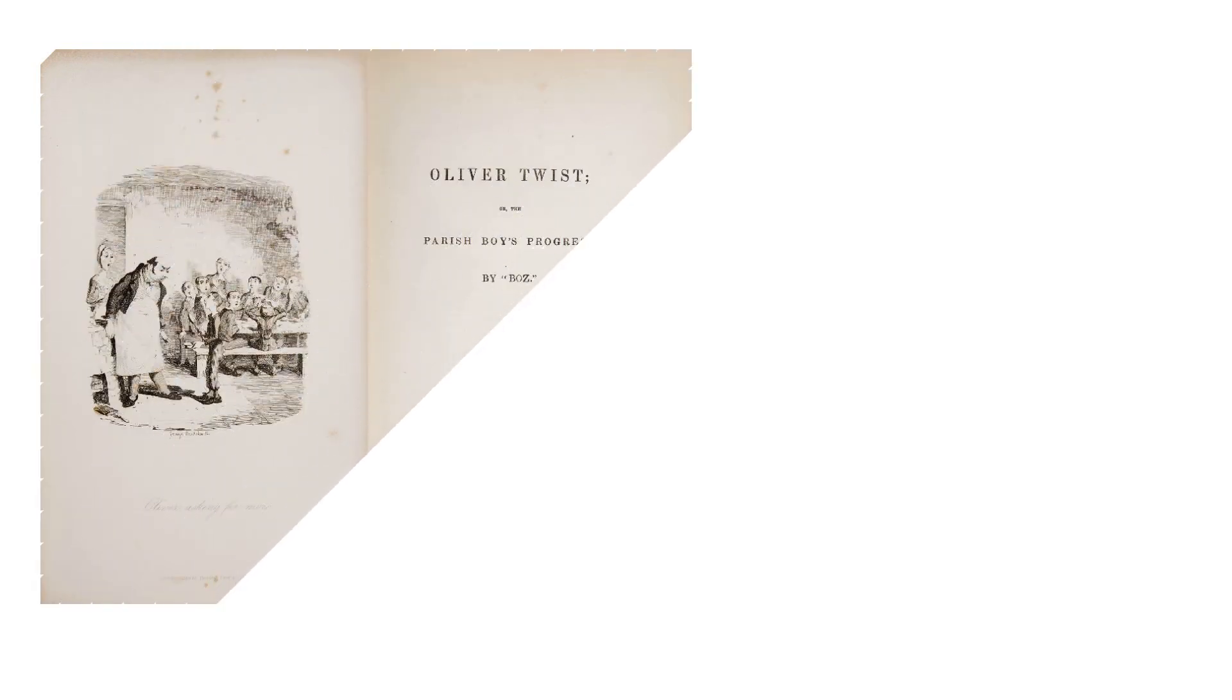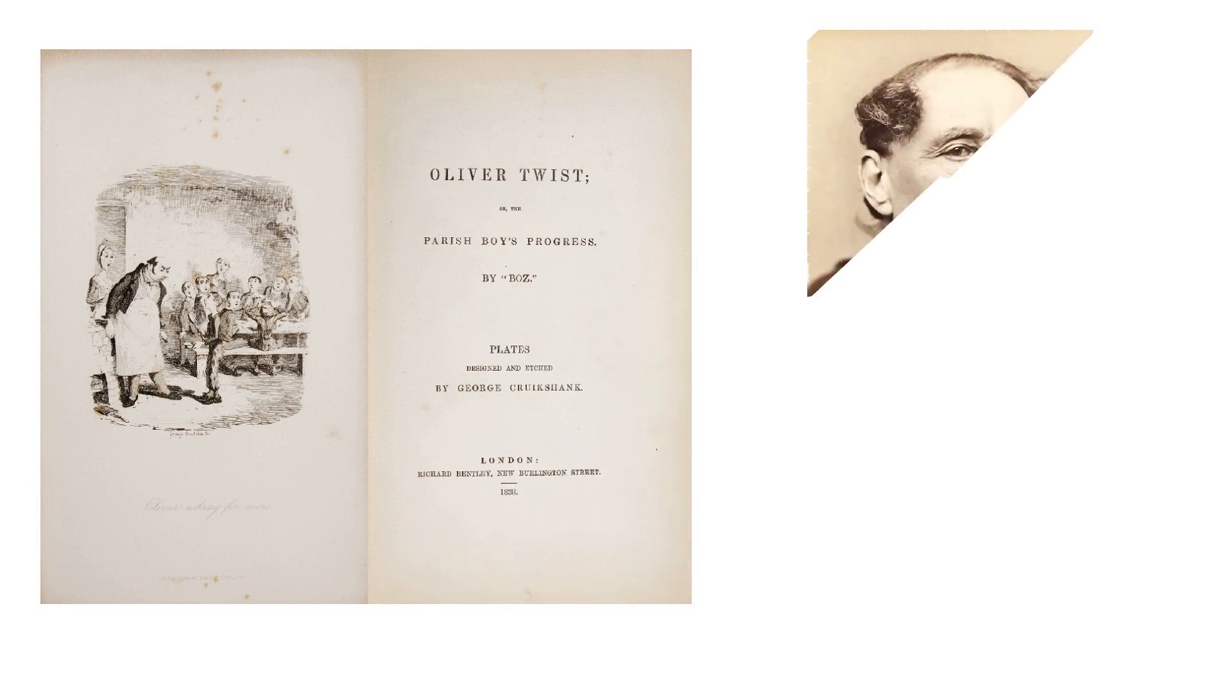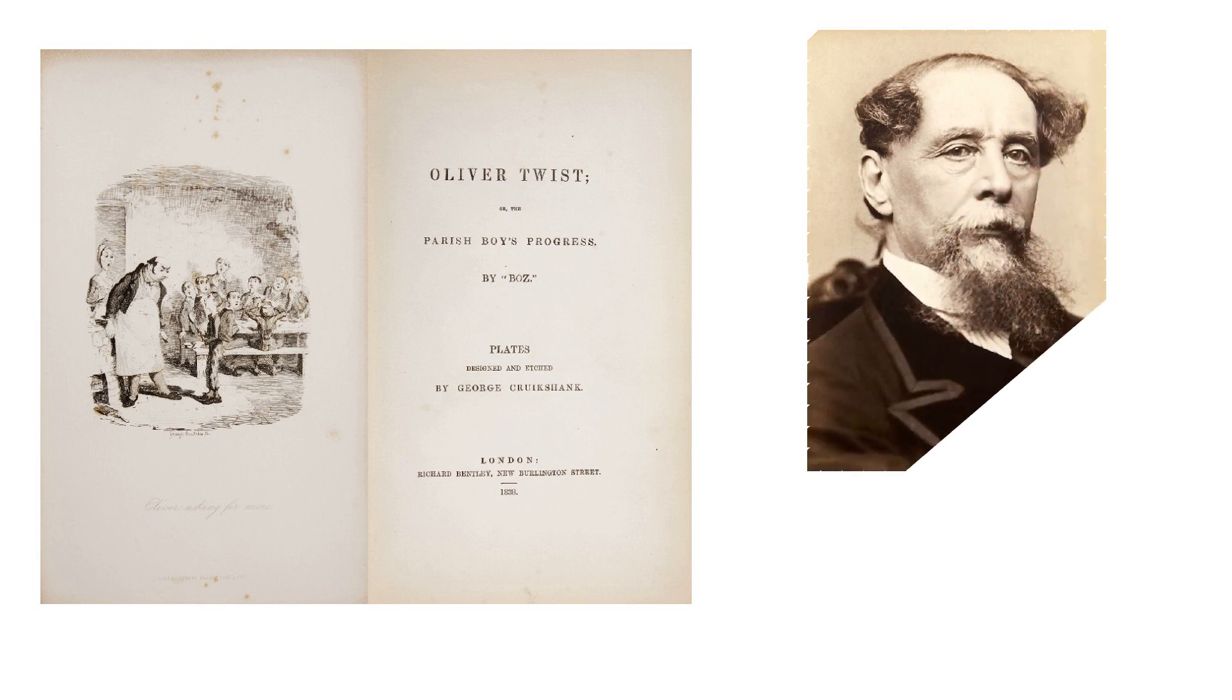Oliver Twist, or The Parish Boy's Progress, Charles Dickens' second novel, was published as a serial from 1837 to 1839, and as a three-volume book in 1838.